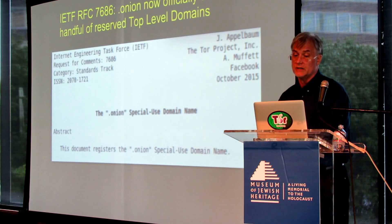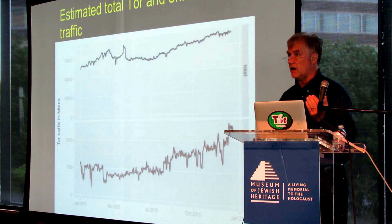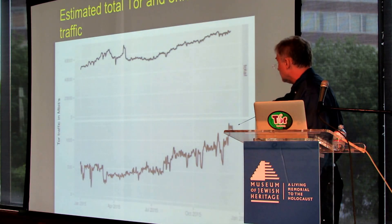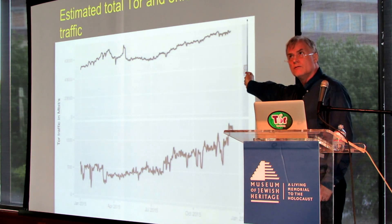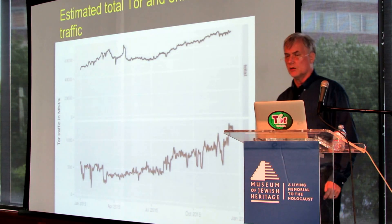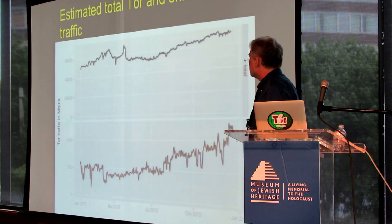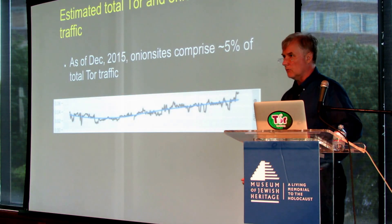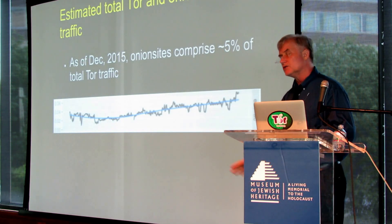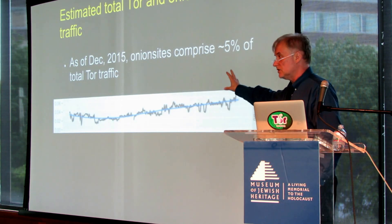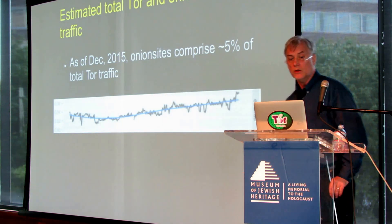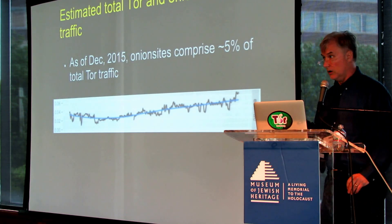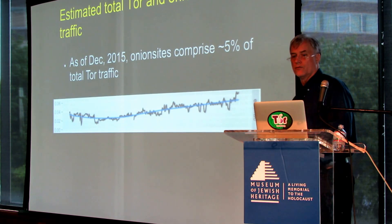Now, how much activity is out there? I mean, people might set up Onion sites and not actually use them at all. This graph shows the total Tor traffic, which was about 75 gigabits per second currently — back in January it was more like 60 gigabits. The point is that Onion site traffic is, in fact, a tiny fraction of what goes over Tor. As of last December, we calculated through research we've been doing — and it's very tricky because you have to gather statistics in a privacy-preserving way — it's only about 5% of total Tor traffic. And given the activity that places like Facebook are having, you could imagine that a good fraction of this is just Facebook.